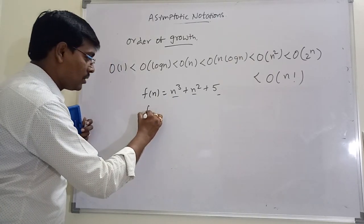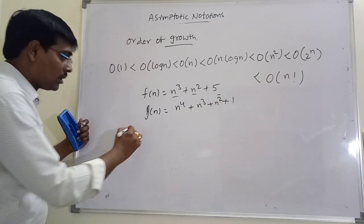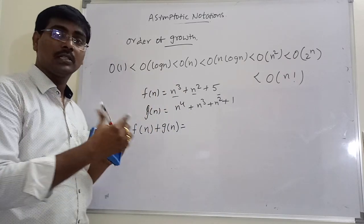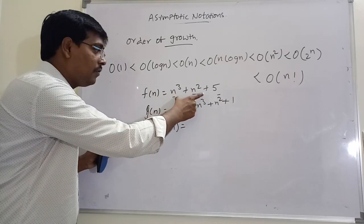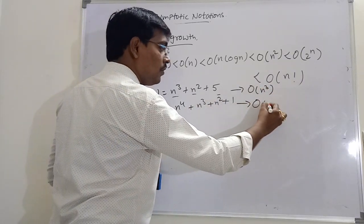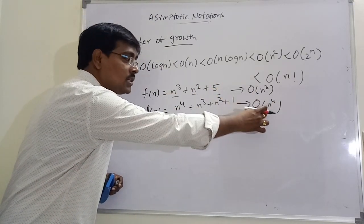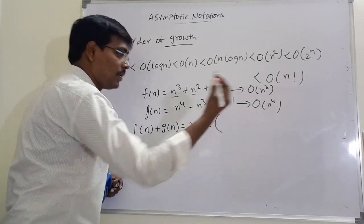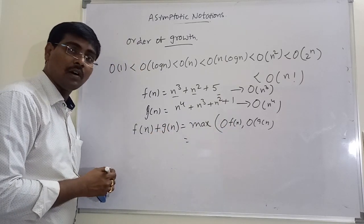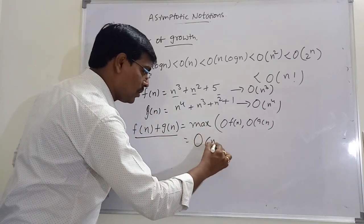For example, suppose f(n) is some function and g(n) = n⁴ + n³ + n² + 1. To calculate the time complexity of f(n) + g(n): the time complexity of f(n) is O(n³) and the time complexity of g(n) is O(n⁴). So f(n) + g(n) is the sum, and among these the maximum is n⁴. The formula is maximum of O(f(n)) and O(g(n)), and the maximum one is the time complexity for the sum.